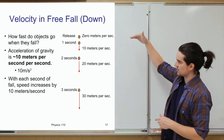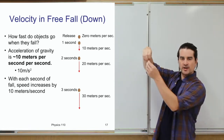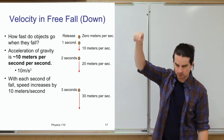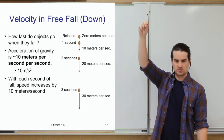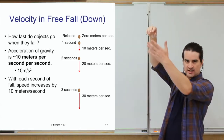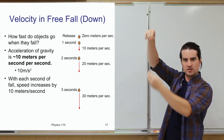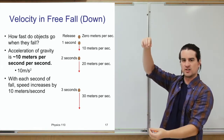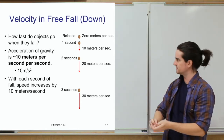This is also why the longer an object has been falling, the greater the distance it travels in each second — the same reason the higher clips in that string had fallen longer, gained more speed, and hit the ground in smaller time intervals.